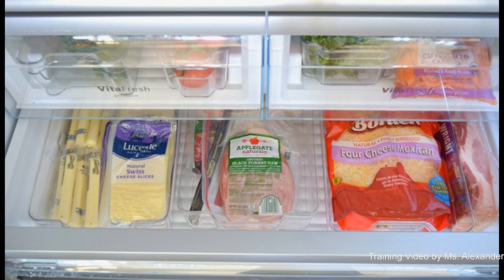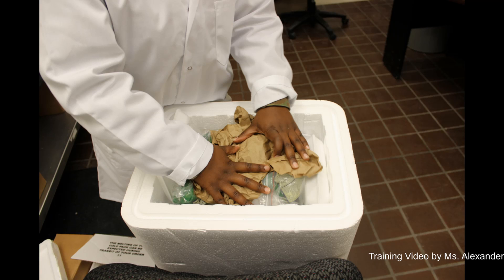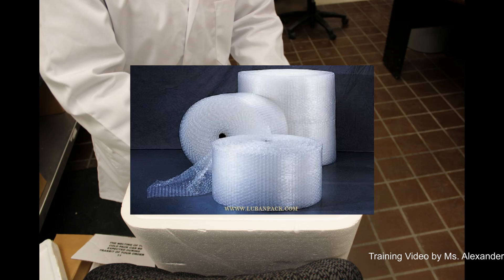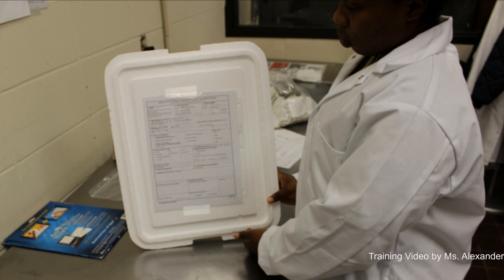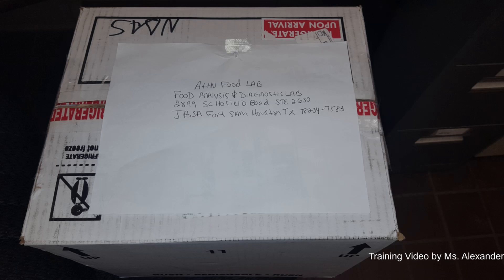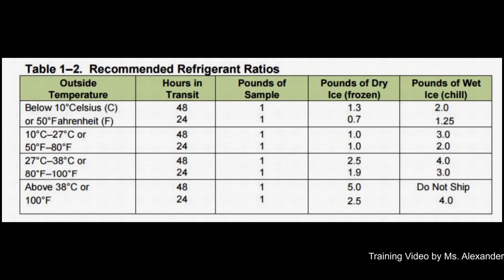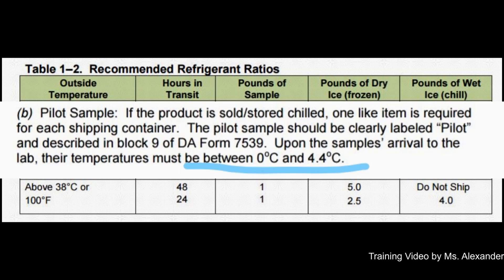You also need to make sure that chilled samples are pre-chilled in order to arrive at the lab at the required temperature. When shipping heavy or bulky items, pack them carefully. Use extra packing material to prevent product from shifting and damaging the samples during transit. Place a copy of your DA Form 7539 in a zipper bag and attach it to the lid of the container. Ship in several boxes instead of one heavy box. Page 3 of the Lab Sample Submission Guide has recommended refrigerant ratios to determine how much refrigerant to use to maintain the correct temperature during transit.